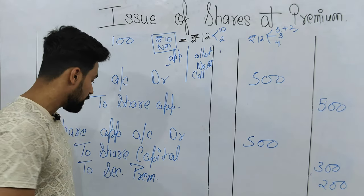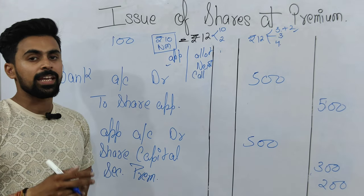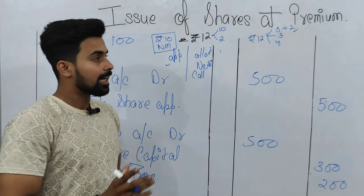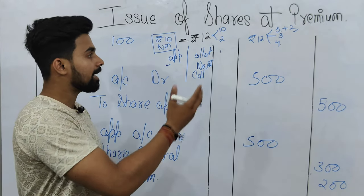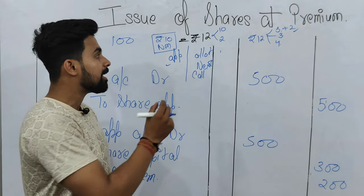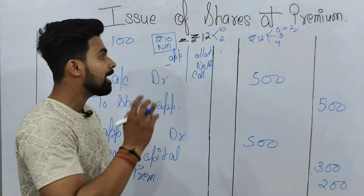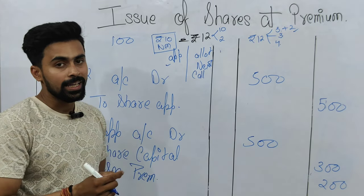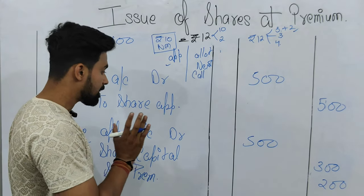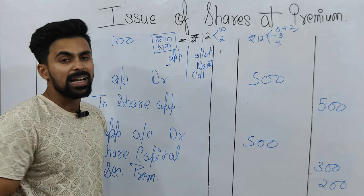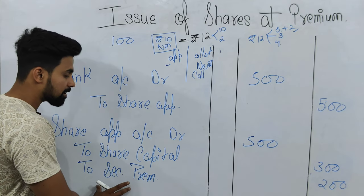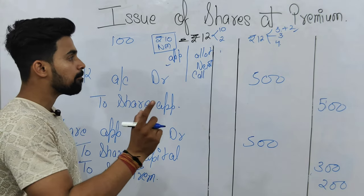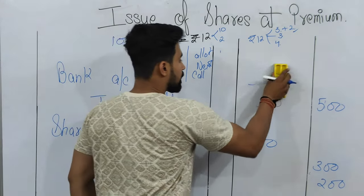The reason Securities Premium is credited is that it is a gain for the company — the company is selling a Rs. 10 share for more than Rs. 10. According to the nominal account rule — 'credit all incomes and gains' — we credit the Securities Premium account. That was our first case, in which premium was received along with the application money.